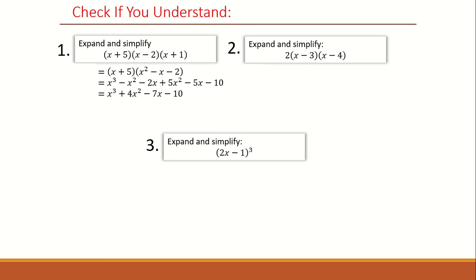For question two, expand the two brackets to get x squared minus 7x plus 12. And then multiply the number, which is 2, by the bracket to get 2x squared minus 14x plus 24.